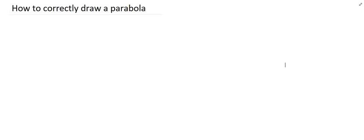The last part of this video will talk about how to correctly draw a parabola — how to do it the proper way — and then in the next video we'll do many examples. Drawing a parabola is a three-step process. You will need the following three things: the x-intercept, the y-intercept, and the turning point. To do the x-intercept, you make y equal to 0. To do the y-intercept, you make x equal to 0. And there will be three ways to find the turning point, which I will discuss in this example.